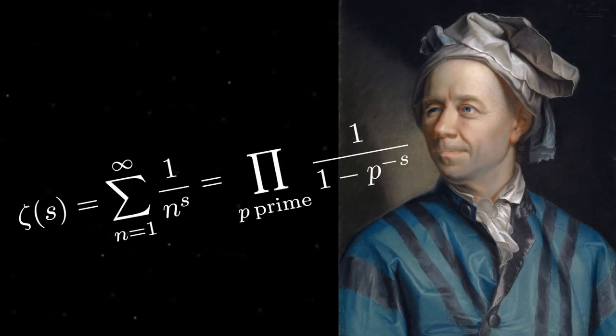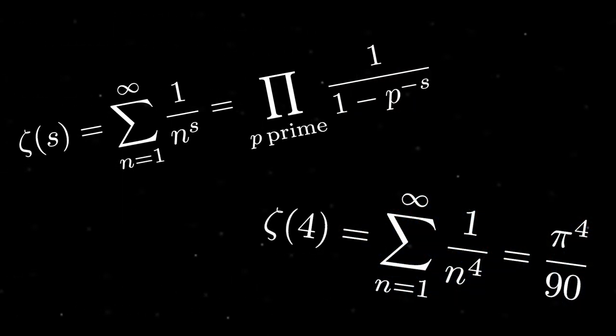The roots of the zeta function can all be found when Euler used it as notation to describe the sum of the reciprocals of the natural numbers to the power of some s, which is inputted into the function.